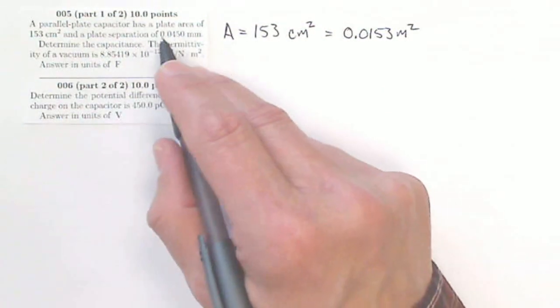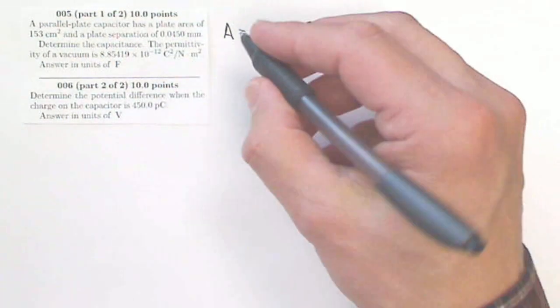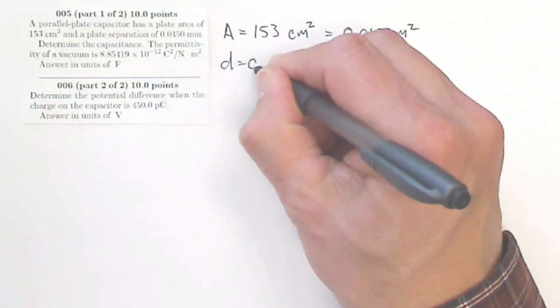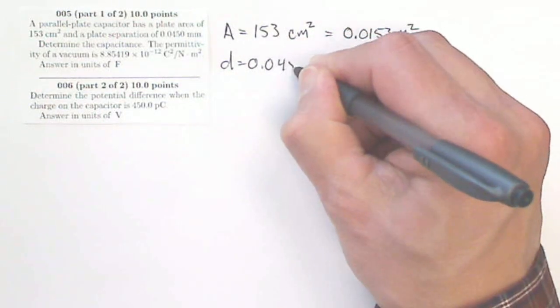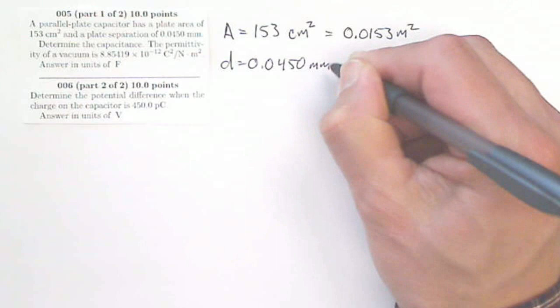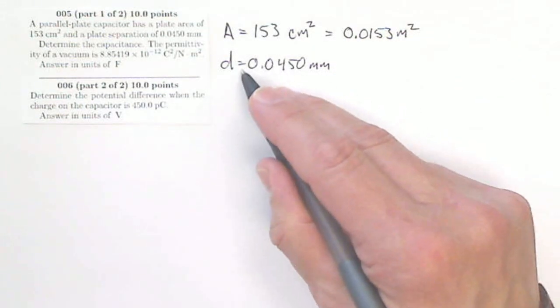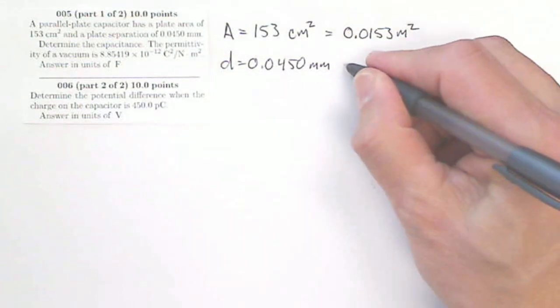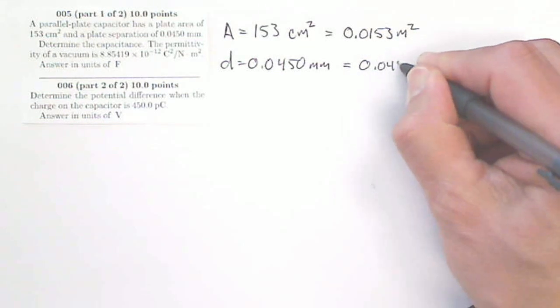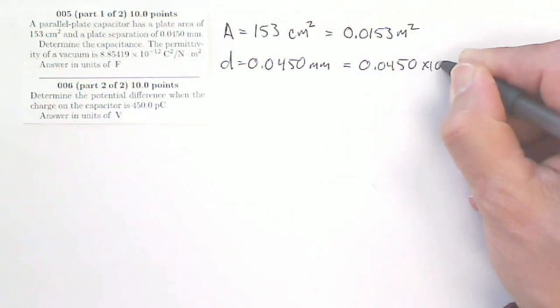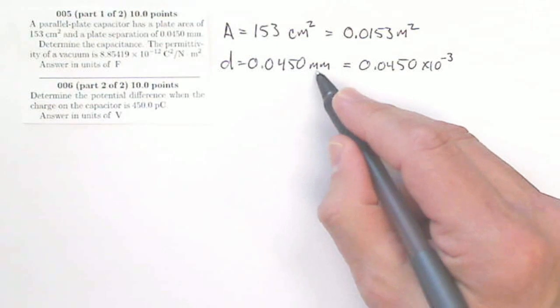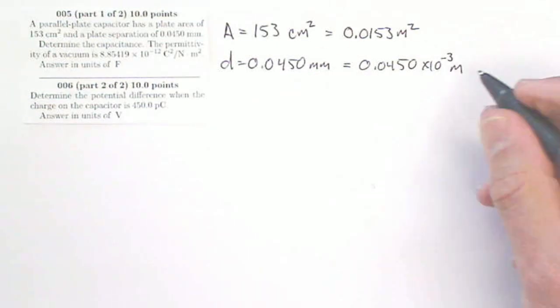A plate separation of 0.0450 millimeters, so that's D, is 0.0450 millimeters. If I want to convert that into meters, I would have to move this decimal three places, or I could write that as 0.0450 times 10 to the minus 3, because times 10 to the minus 3 means millimeters.